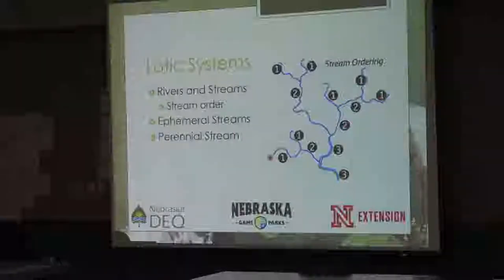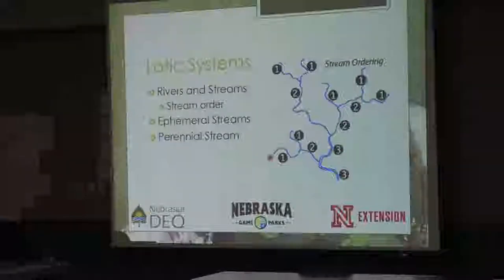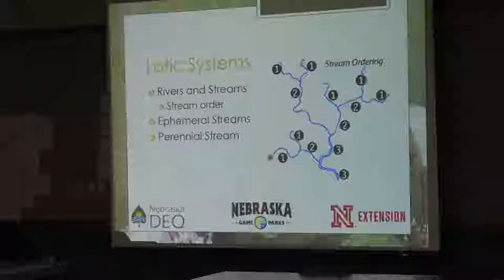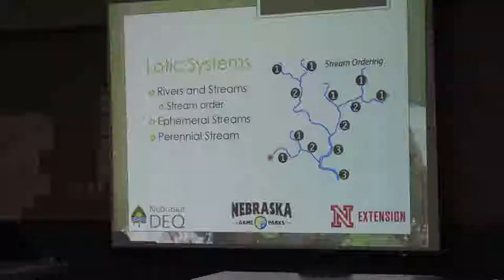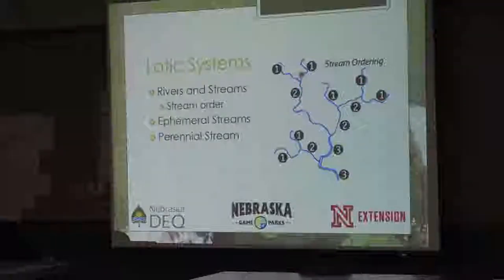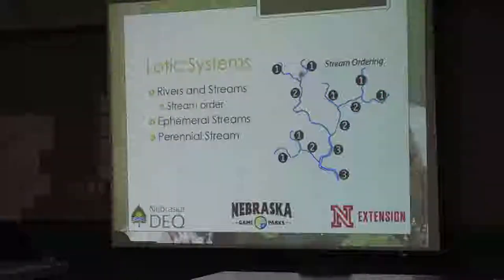Narrowing down into more detail: lotic systems are rivers and streams — flowing water. Lotic means flowing water, as opposed to lentic systems, which are lakes and ponds — more standing water. Stream ordering is an important concept. When ordering a stream, the order only goes up when two of the same number meet. A first order stream is a headwater or source — the very start, smallest, with least amount of water and flow.